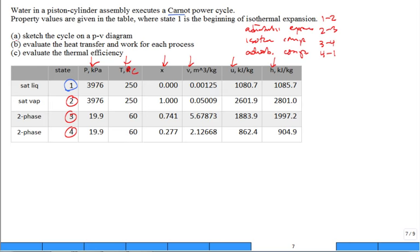And they want you to sketch the cycle on a PV diagram. Well, state one is saturated liquid, and state two is saturated vapor. I'll take three minutes. I'm going to pause. I want you to sketch the PV diagram using this information in the table.